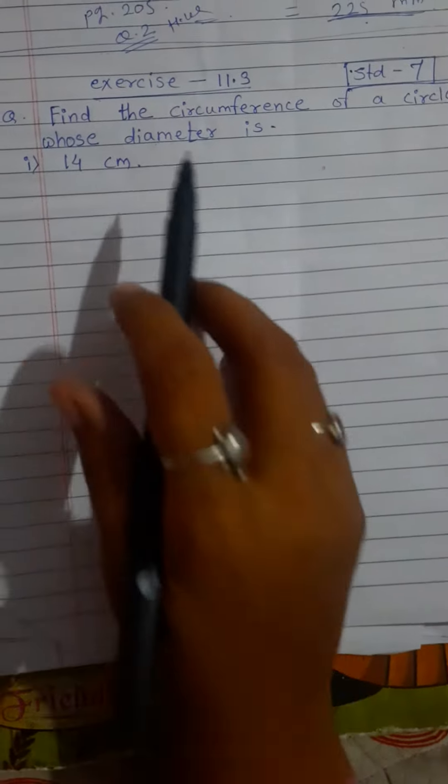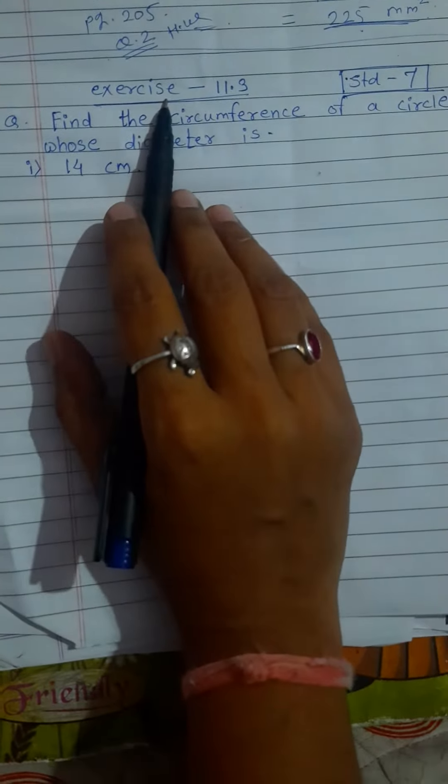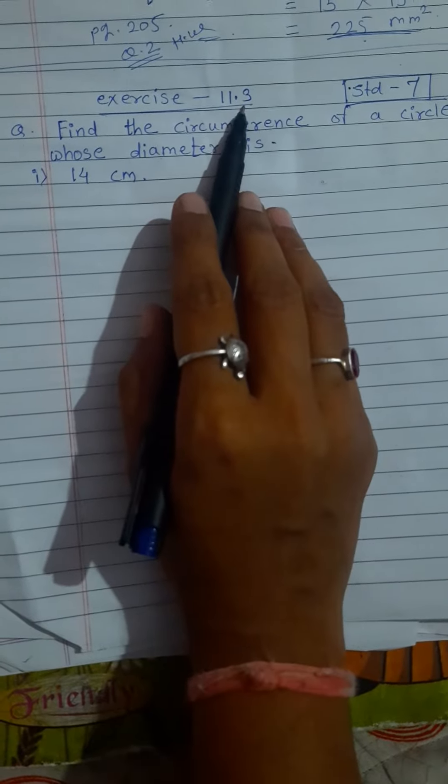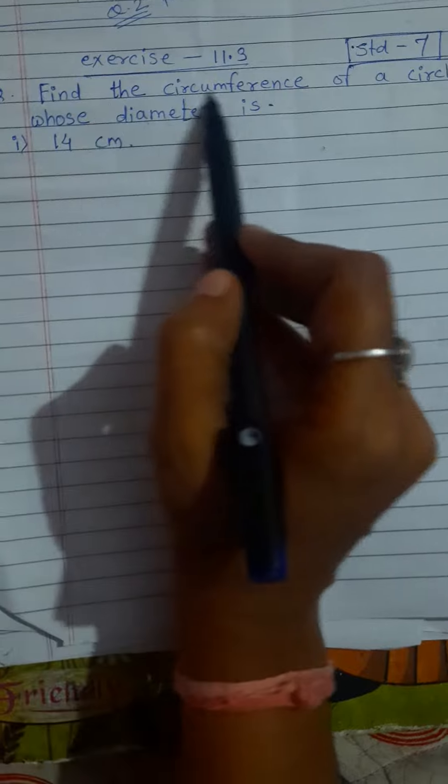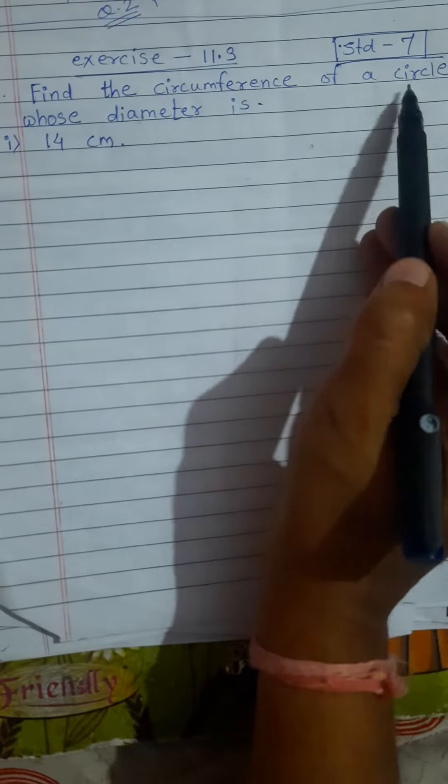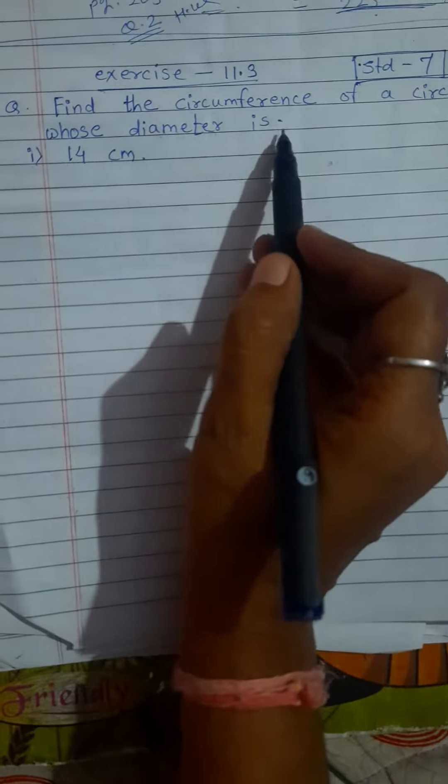Hello students, in our exercise 11.3 there is a question number 2. Find the circumference of a circle whose diameter is given.